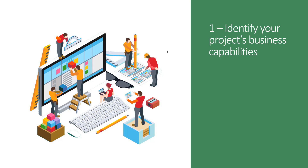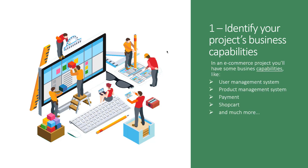Let me show you an example. In an e-commerce project, you have some business capabilities like user management system, product management system, payment, shopping cart, and much more. Each of these items are business capabilities, and as you can see, each item is a feature — a functionality of my e-commerce project. So the first thing you should do when you start developing a microservice-based project is identify your project's business capabilities, your project features and functionalities.